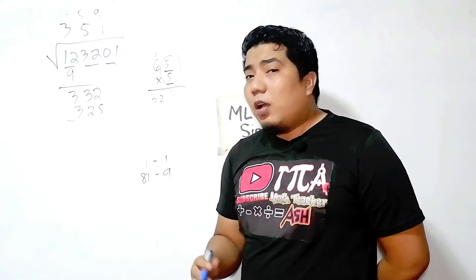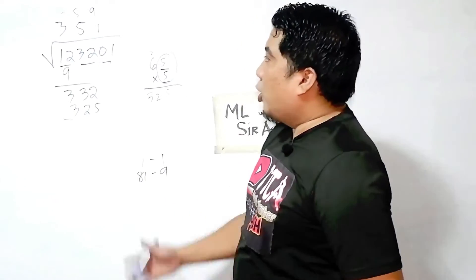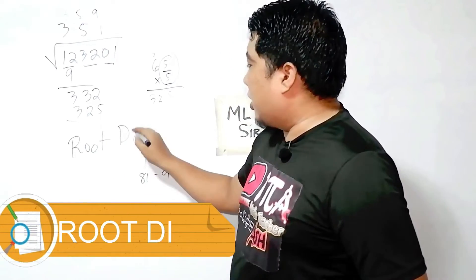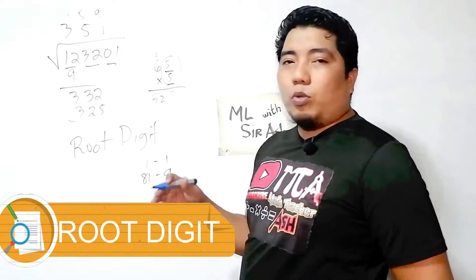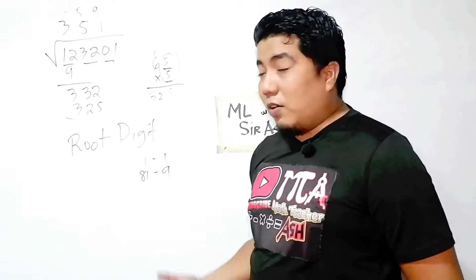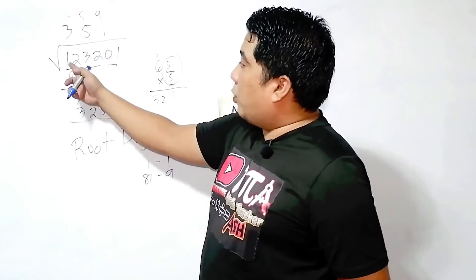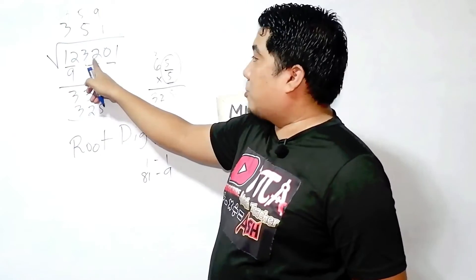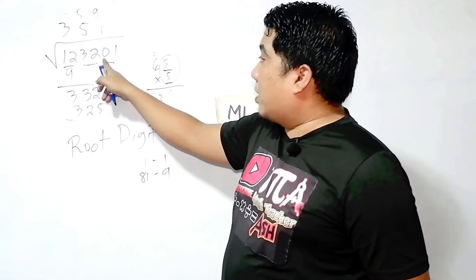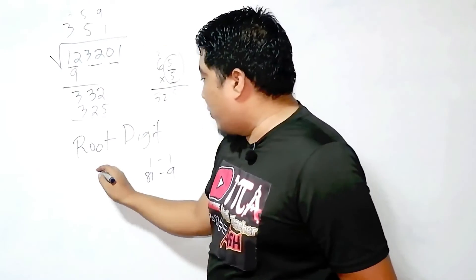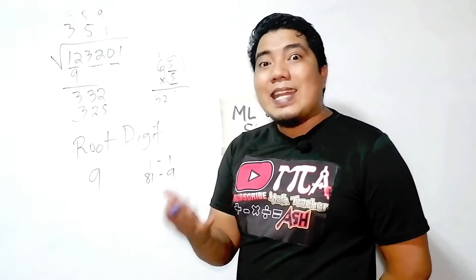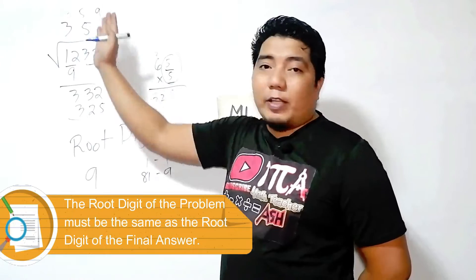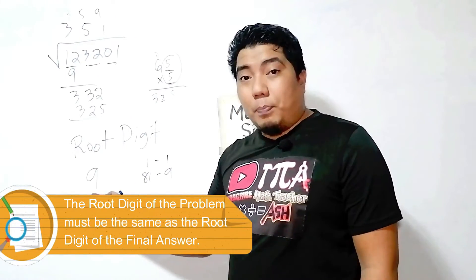Now, how do we know which of the two is the final answer? You will use the concept of the root digit — the sum of all the digits of the given number. So add all the digits in the original problem: 1 plus 2 is 3, plus 3 is 6, plus 3 is 9 — wait, 6 plus 2 is 8, plus 0 is 8, plus 1 is 9. Therefore your root digit is 9. If you consider the root digit of your perfect square candidate, it should coincide with the root digit of the original problem.